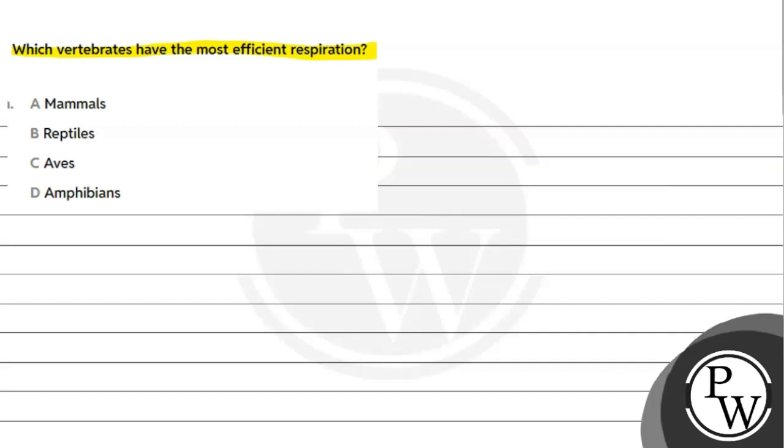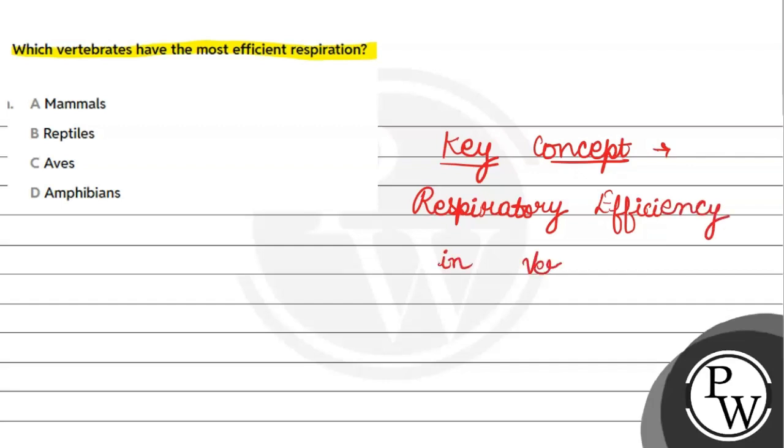First, mammals. Second, reptiles. Third, aves. Fourth, amphibians. So, the key concept is respiratory efficiency in vertebrates. Here we have some vertebrates, and we have to tell which respiratory efficiency is the most efficient.